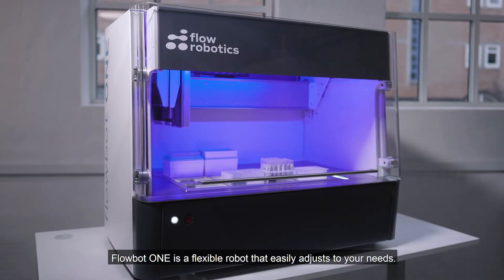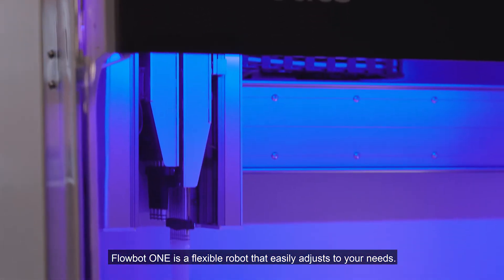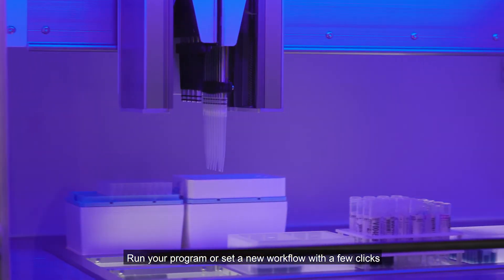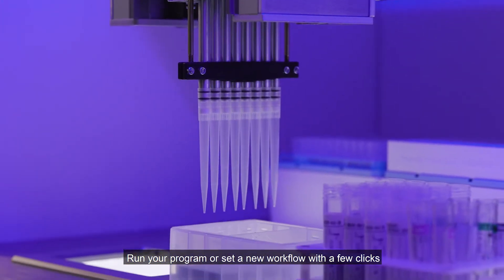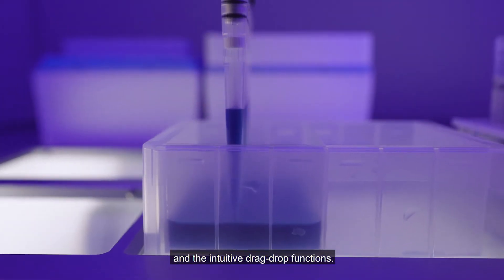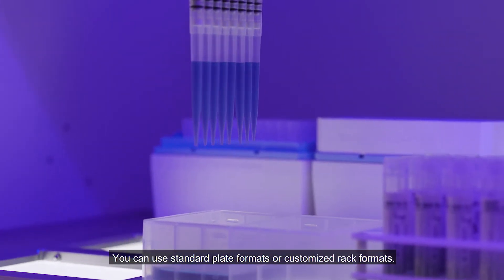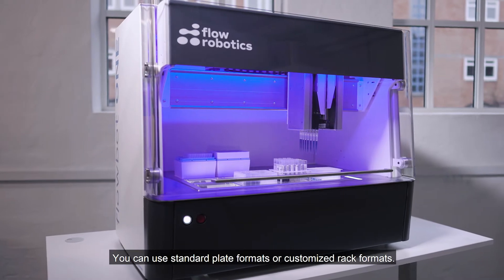FlowBot 1 is a flexible robot that easily adjusts to your needs. Run your program or set a new workflow with a few clicks and the intuitive drag-drop functions. You can use standard plate formats or customized rack formats.